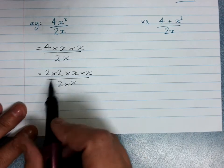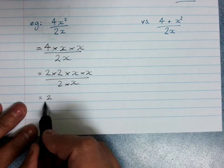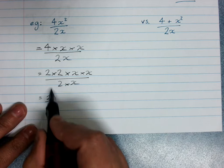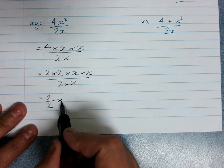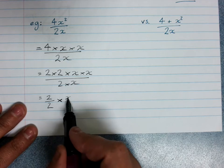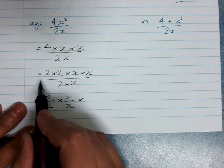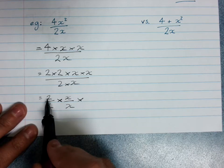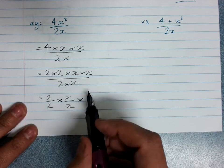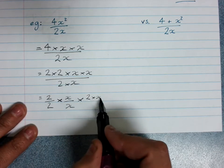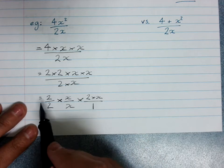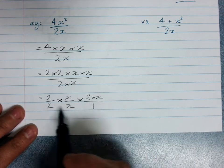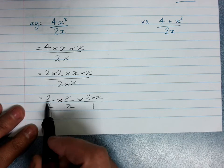Because now I'm going to separate this out. This is 2 over 2, this part of the fraction, times x over x. I'm going to get another pair there. Times, now everything that's left. What have I got left on the top here? One 2 and one x. That's 2 times x. And there's nothing left on the bottom, so it's over 1. So all I've done is I've rearranged my fraction.